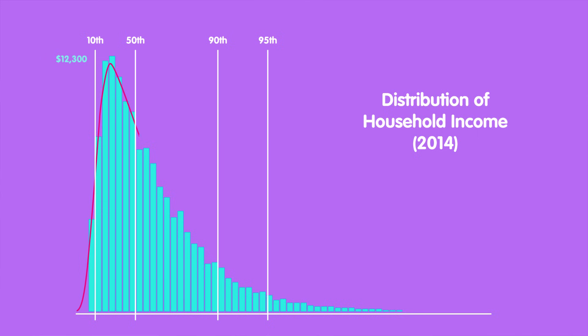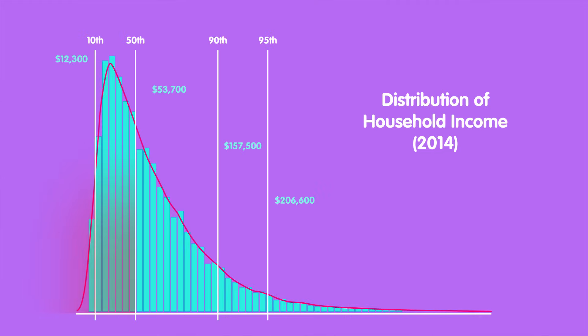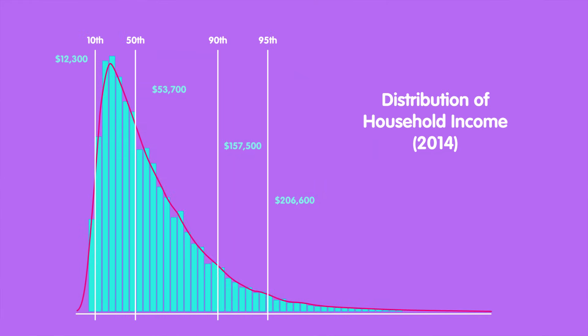The height of the bars in the graph indicates the number of households at a certain income level. And the point labeled 50th is an important one, because it's the median income — the absolute middle observation in the sample. That means that 50% of households have lower incomes than that level, and 50% have higher incomes. In this case, the median income is $53,700. But be careful about the conclusions you draw from this graph.